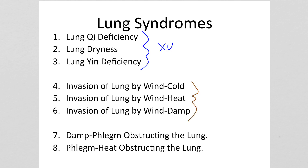We have an invasion of the lung by wind cold, wind heat, or wind damp — these are full conditions. And we have damp phlegm or phlegm heat obstructing the lungs — these are also full conditions.